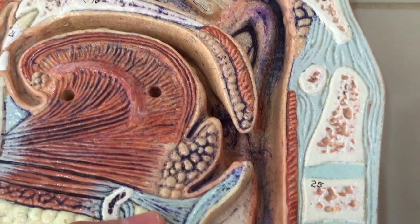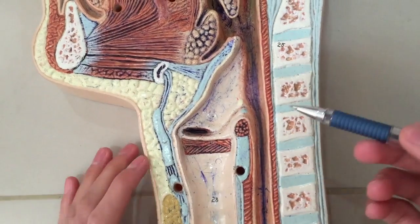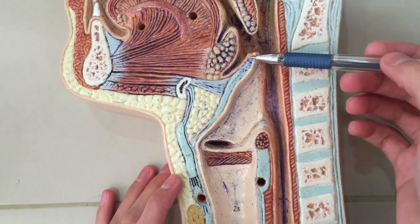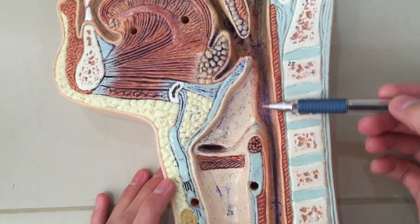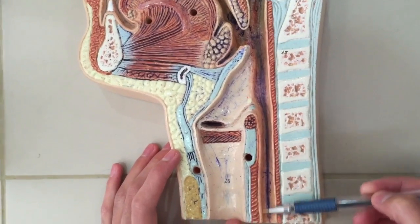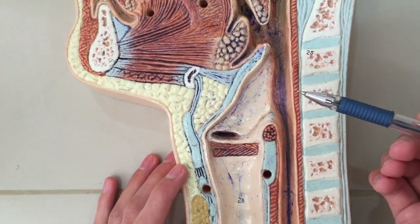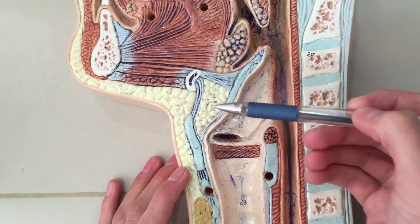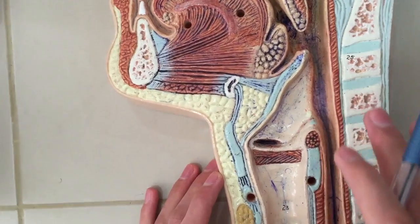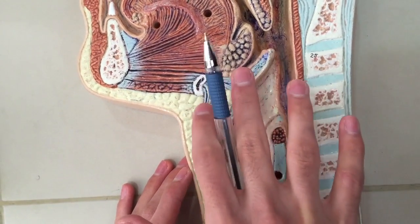The laryngopharynx extends from the upper border of the epiglottis to the level of C6, where it becomes the esophagus. This is the epiglottic cartilage, this is the hyoid bone, and this is the thyroid cartilage. This would be the thyrohyoid membrane. Laterally, the laryngopharynx is bounded by the thyroid cartilage and the thyrohyoid membrane.